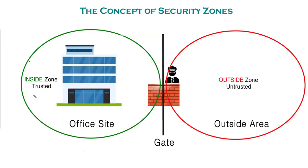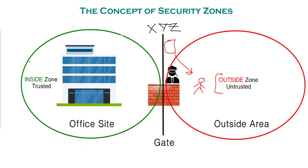Now let's move into the concept of security zones using an example of company XYZ. XYZ is a strict private company with sensitive data and strict rules for outside visitors. A person from the outside — the untrusted zone — approaches the gatekeeper saying he needs to visit Bob on the second floor. The gatekeeper checks his register, finds no entry allowing this visit, and turns the person away.